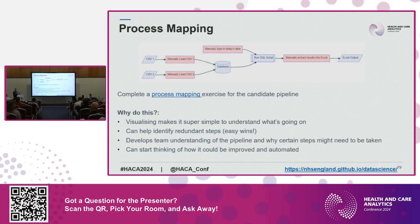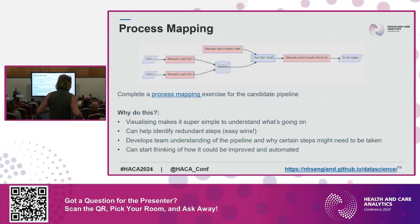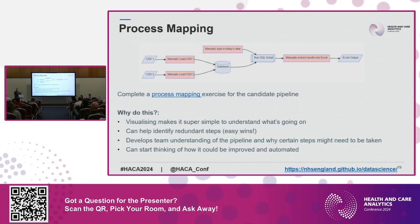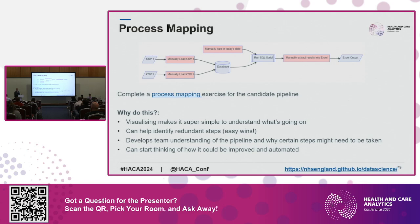Before you even write a single line of code, map out the current process — basically make a flowchart, start to finish. This helps you get your head around the process and figure out which bits you're going to be able to turn into functions. It's also really good documentation so that when someone else joins the team, they'll be able to get up to speed more quickly.